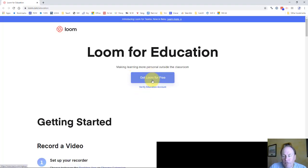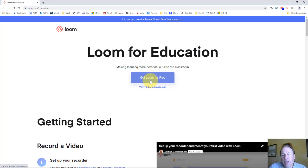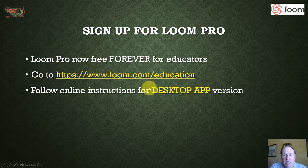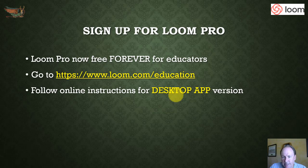You're going to click on Get Loom for Free. It's going to give you some options. The option you're going to want to download is the desktop app version. That's going to give you all the abilities to open up other programs on your computer like PowerPoint and things like that and be able to effectively use them within Loom. So you want that desktop app version. Go ahead and follow through those steps. You'll create an account and verify your email account with them, and then it will allow you to download the app.